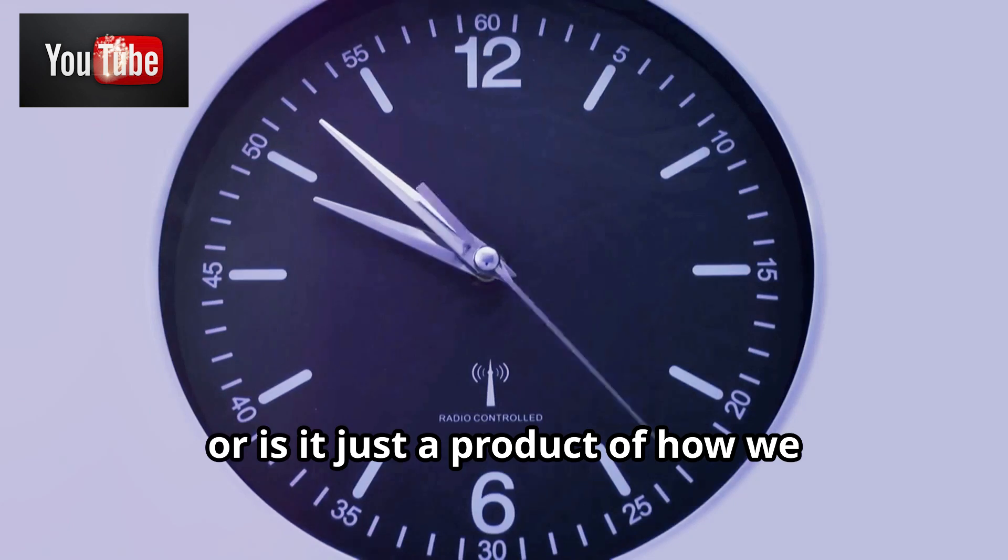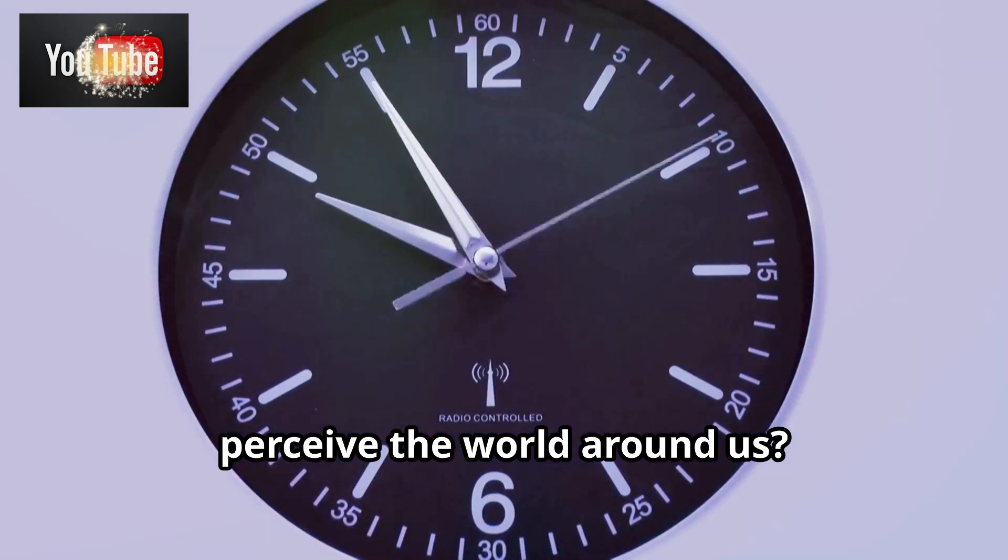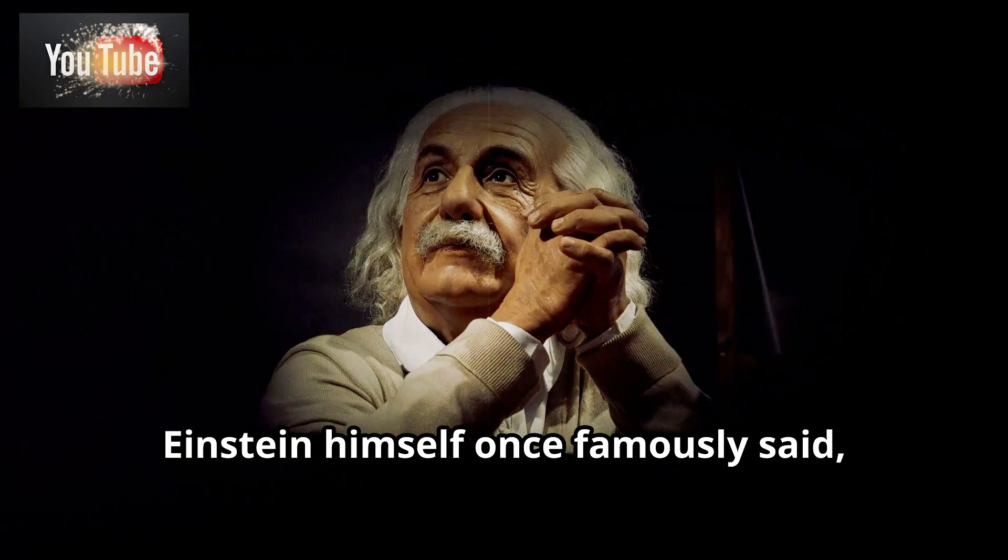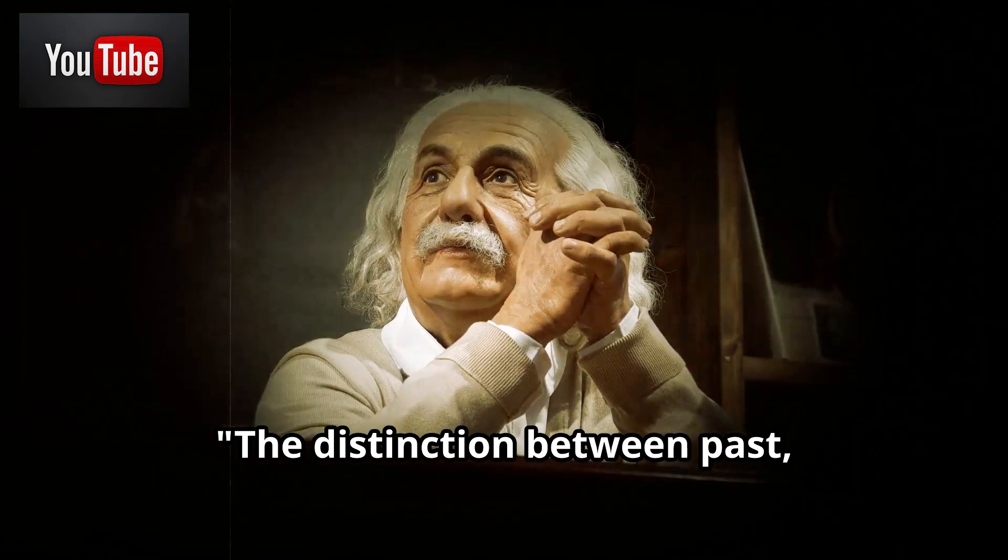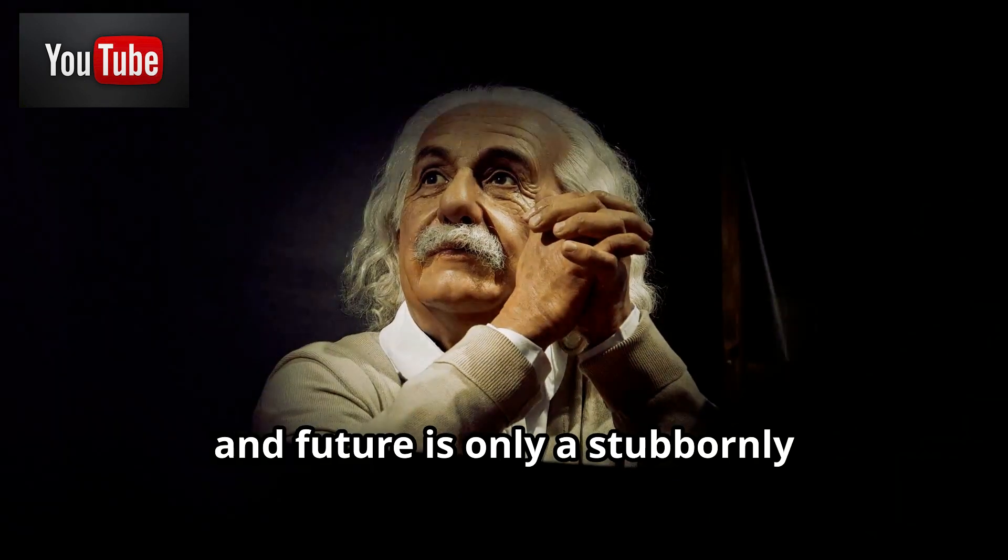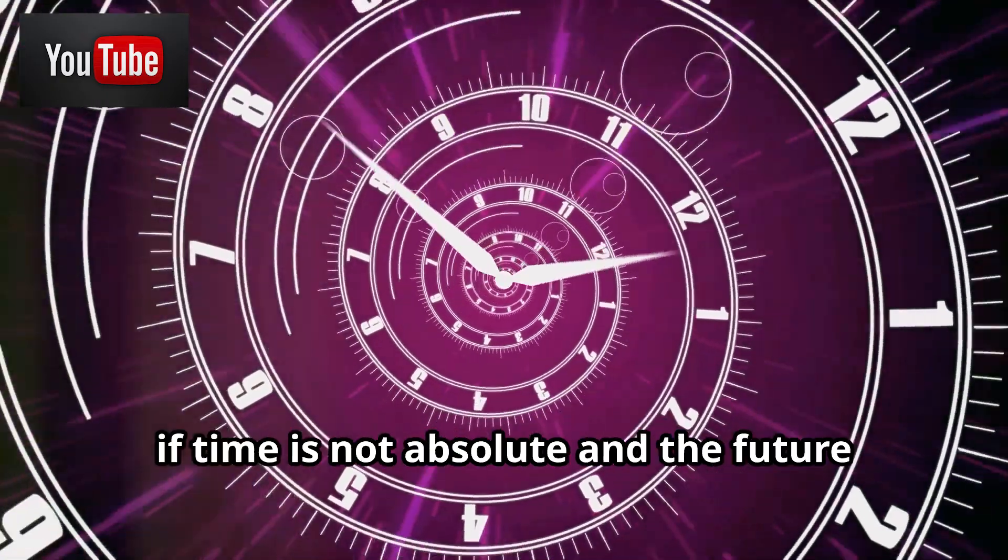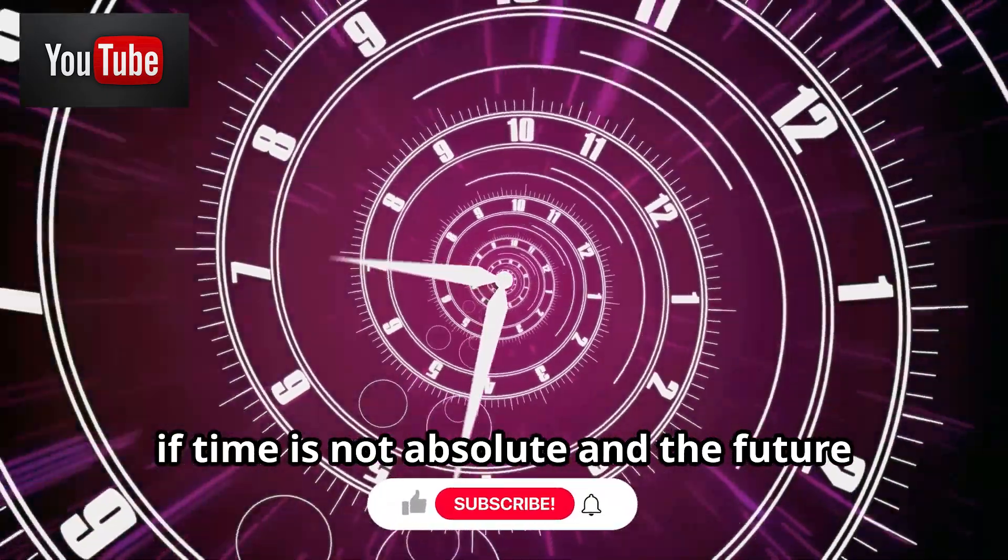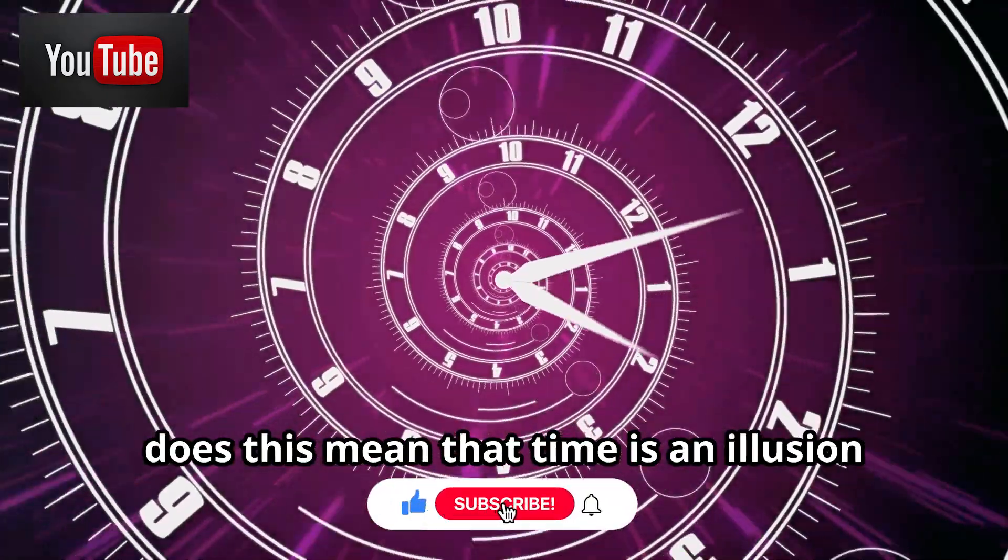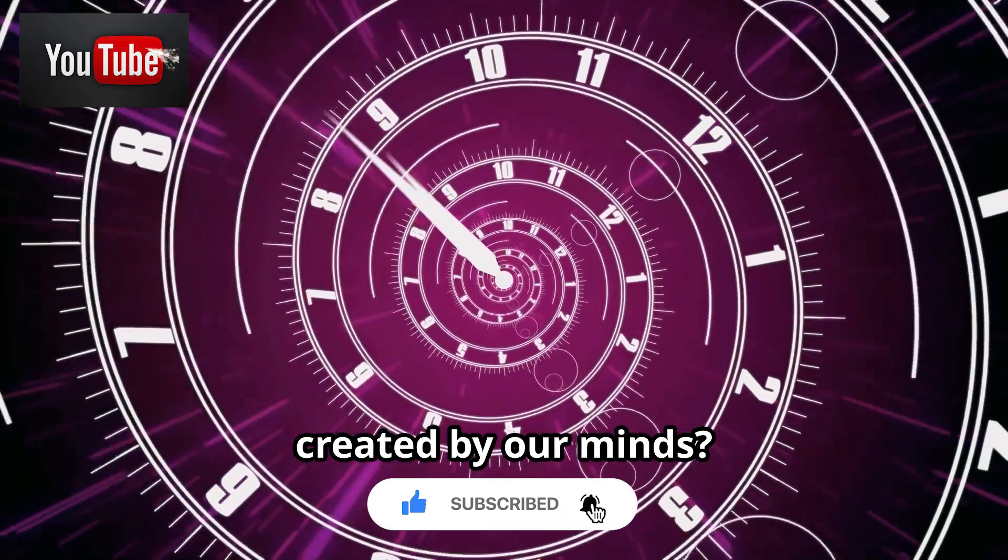Or is it just a product of how we perceive the world around us? Einstein himself once famously said, the distinction between past, present, and future is only a stubbornly persistent illusion. So if time is not absolute and the future might already exist, does this mean that time is an illusion created by our minds?